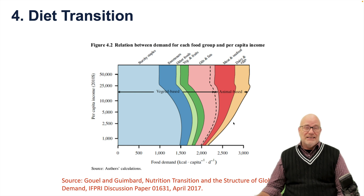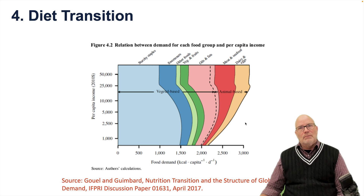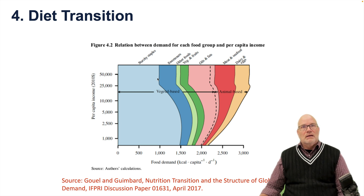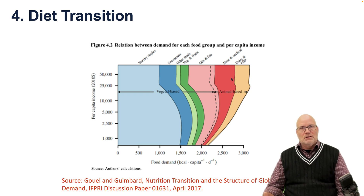Total calories increase, but more and more of them come from animal-based items rather than vegetable-based items. This continues until we reach a saturation point at around $50,000 in this graph, at which point the level of starchy staples and everything else remains relatively constant after reaching that certain income level.